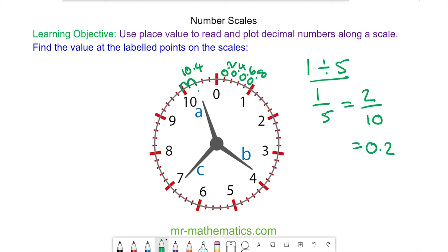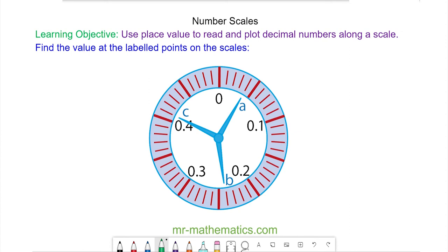Okay, to work out the value of b we can start at 3, 3.2, 3.4, 3.6, and 3.8, so b will be pointing at 3.8. And for c we can work backwards from 7 to 6.8, so c will be at 6.8. Okay, let's try one more question.